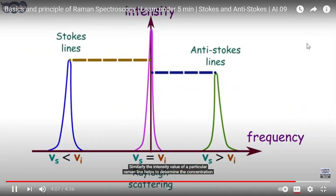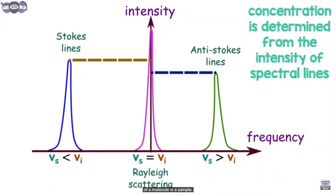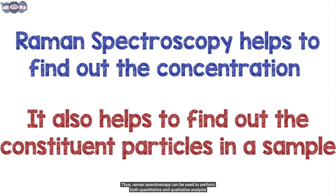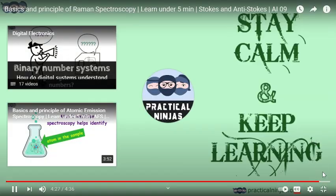The Raman spectra give a molecular fingerprint that is different for different molecules. By studying the spectra, one can identify rotational levels and thus a particular molecule, enabling qualitative analysis. Similarly, the intensity of a particular Raman line helps determine the concentration of a molecule in a sample, enabling quantitative analysis. Thus, Raman Spectroscopy can be used to perform both qualitative and quantitative analysis on a sample.